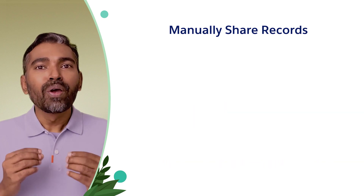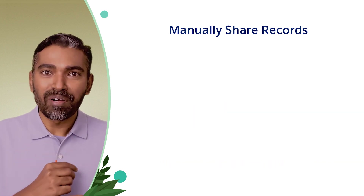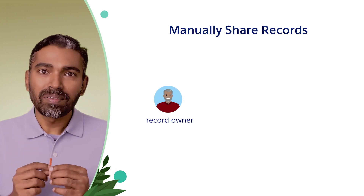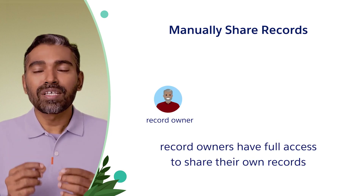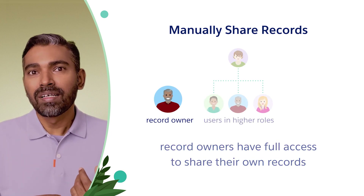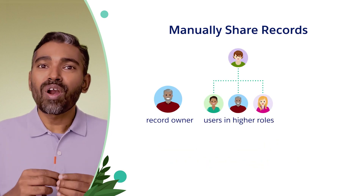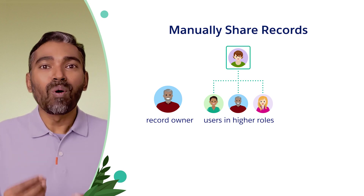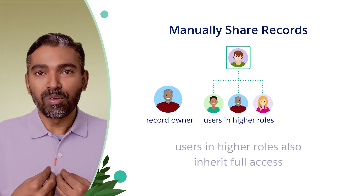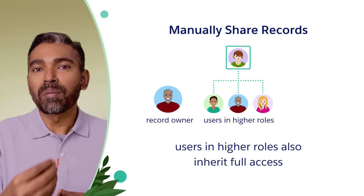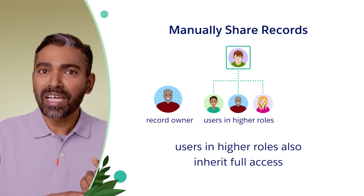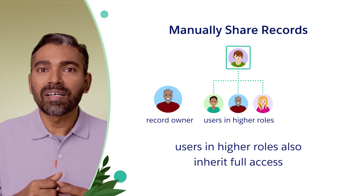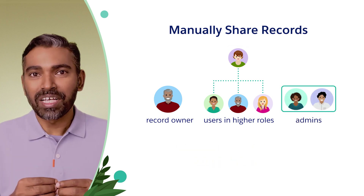Who has privileges to manually share a record? Obviously, the owner of the record — they have full access, so they will be able to share the record. If you are above the owner of a record in the role hierarchy, you also inherit full privileges and can share the records. So owners can share, anyone above the owner in the role hierarchy can share, and administrators can share.